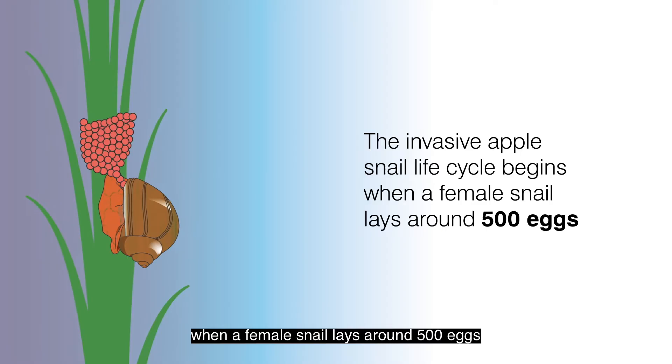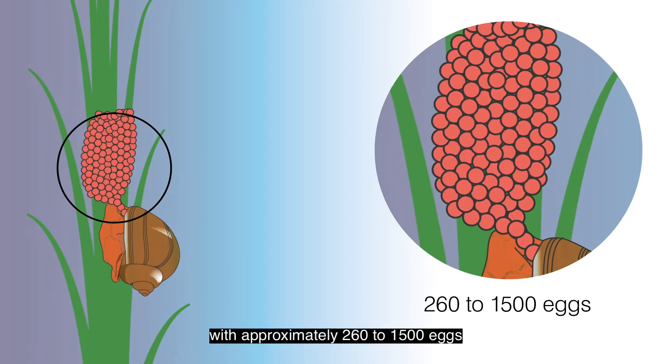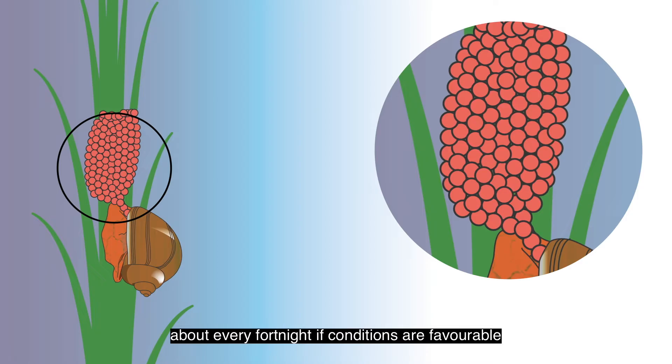The invasive apple snail life cycle begins when a female snail lays around 500 eggs, mostly during the night. Females usually lay one egg batch with approximately 260 to 1500 eggs about every fortnight if conditions are favorable.